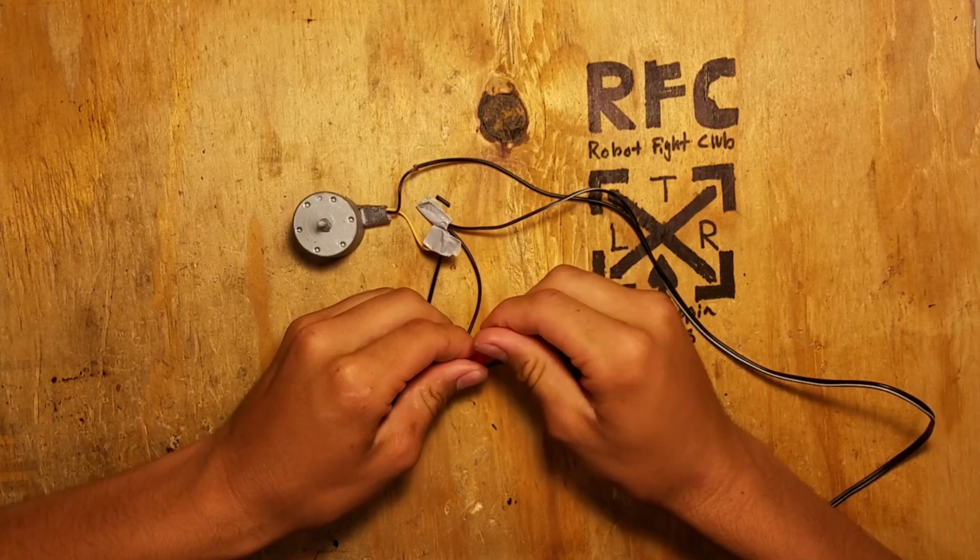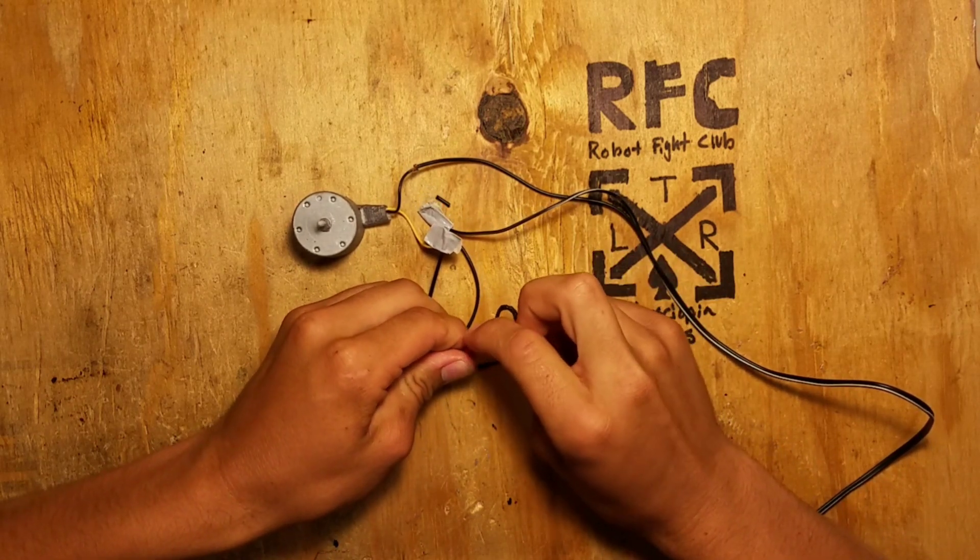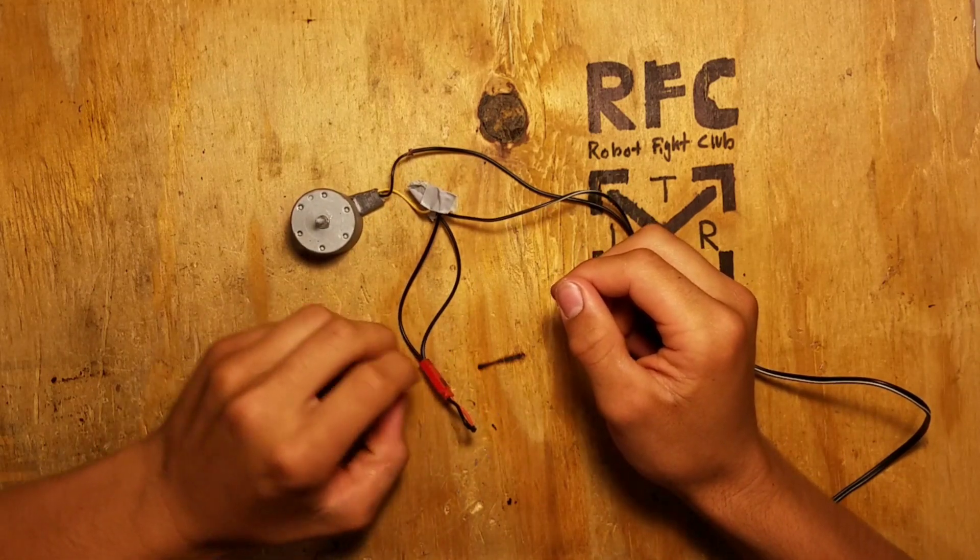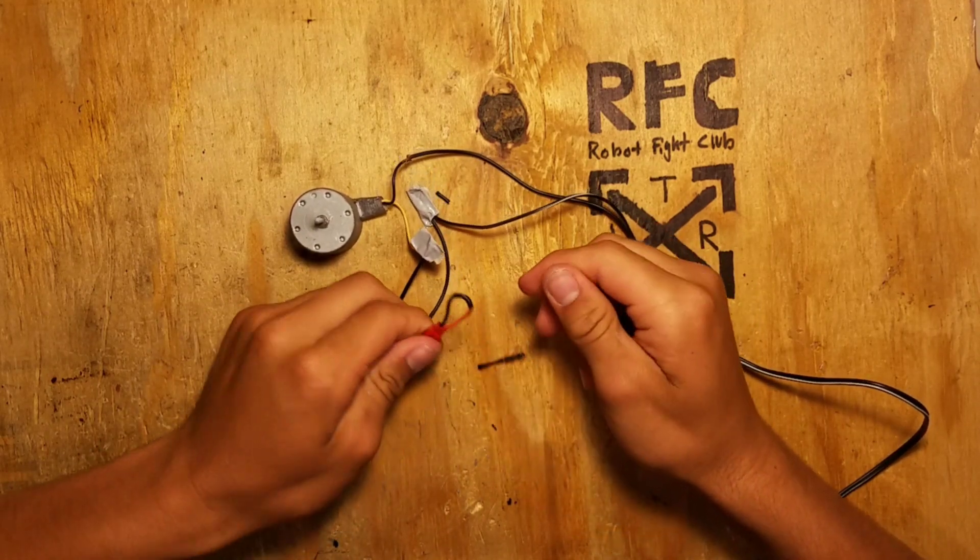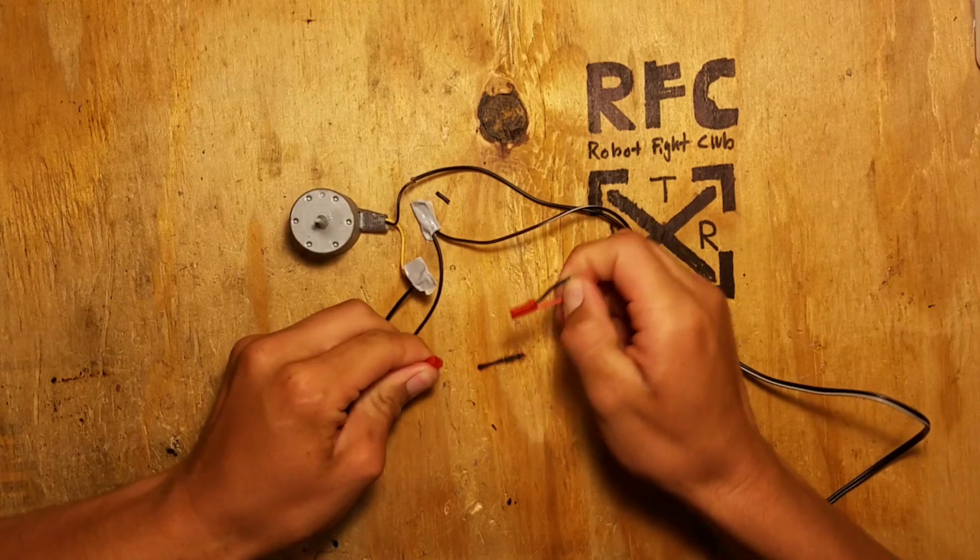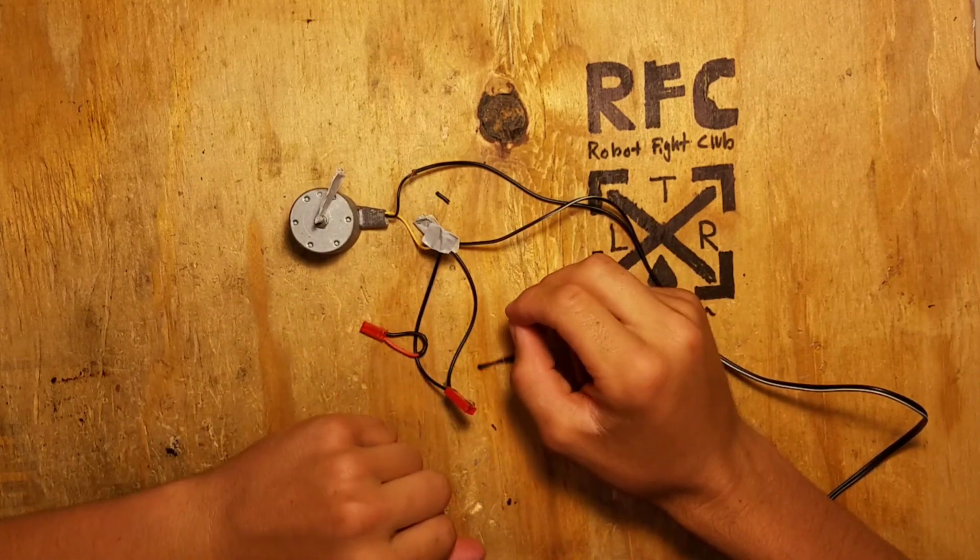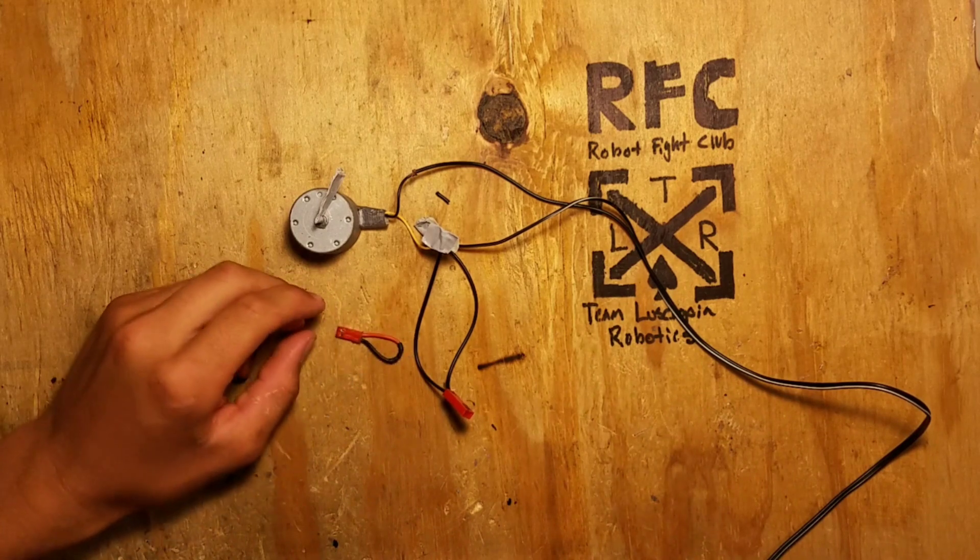This will not come out in combat. These JST plugs stay in very well, so you can just leave that there without any worries of it coming out. When you need to remove it you can just pull on these wires—those are secured in pretty well—so you can just pull on those and take it out. Very easy, very simple, and very obvious.